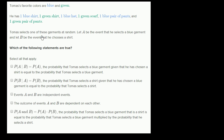Thomas selects one of these garments at random. Let A be the event that he selects a blue garment, and let B be the event that he chooses a shirt. They all deal with probability of event A, probability of event B, probability of B given A, probability of A given B, and probability of A and B.